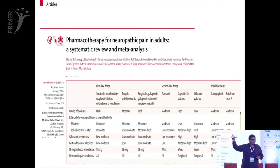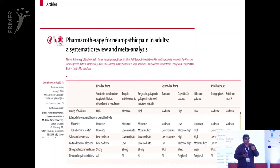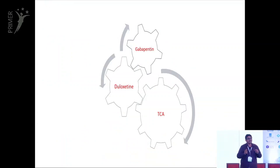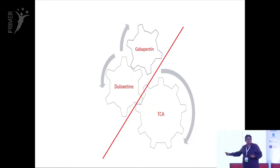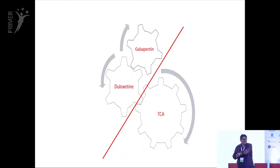The first-line drug can be pregabalin, gabapentin, or duloxetine. After choosing one of these, nortriptyline or amitriptyline comes next. Amitriptyline provides better pain relief, while nortriptyline has fewer side effects like dry mouth. An important combination rule: never combine duloxetine with a tricyclic antidepressant — the side effect profile is huge. You can combine gabapentin with duloxetine, or gabapentin/pregabalin with tricyclic antidepressants, but duloxetine and tricyclic antidepressants must not be combined.